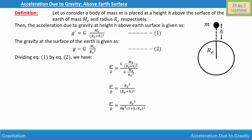Simplifying further, we take Re common from the denominator. Taking Re out gives Re² outside the bracket, leaving (1 + h/Re)² inside. We can cancel Re², giving g' = g / (1 + h/Re)².